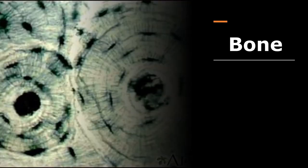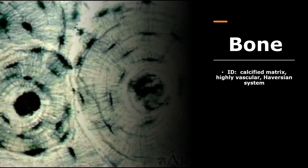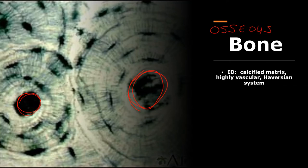Bone is connective tissue — don't forget that. Once you see a picture of bone, you'll never forget it because it looks like tree rings. It has a calcified matrix — all the brown stuff — which is a hard, calcified, solid matrix. It is highly vascular, with large holes in the middle where blood vessels and nerves run through. This system is called the Haversian system. Bone tissue may also be called osseous tissue.